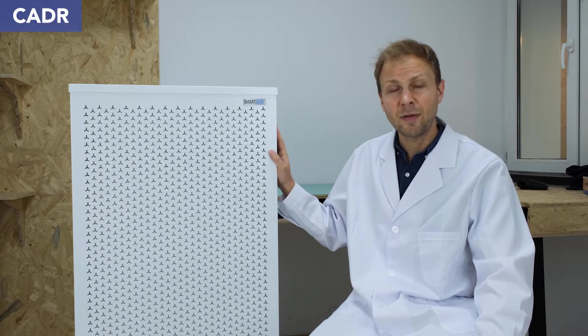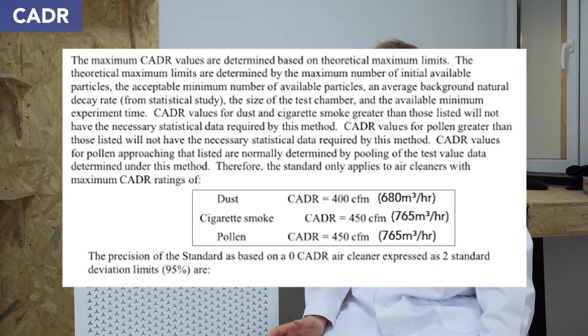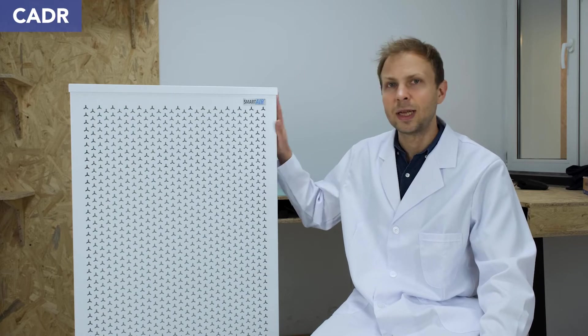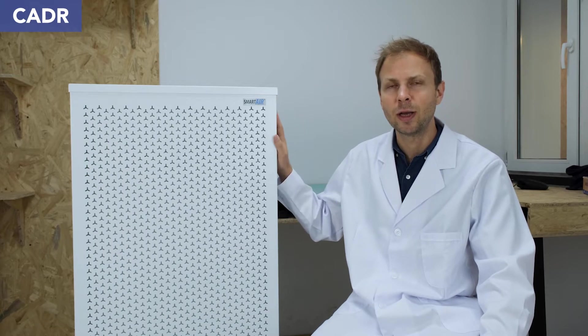The CADR in fact exceeds the measurable amount of most standards. The AHAM standard can only measure up to 400 CFM for dust or 450 for pollen, whereas the Blast Mark II actually outperforms even the AHAM standard so it's really powerful.